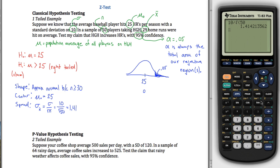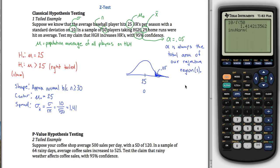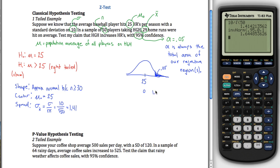To find the critical value, use the inverse norm function on your calculator — hit second, then variables, then inverse norm. Inverse norm takes in the area below the point in question. Since I want the area to the right to be 0.05, I give it 0.95 as the area below. Then I put 0 and 1 for center and spread to get a z-value, and I get 1.645. That's our critical value — the value on the edge of our rejection region.